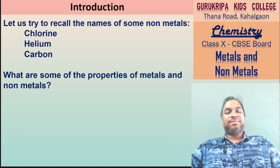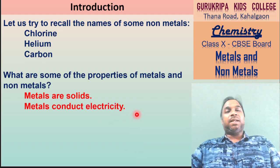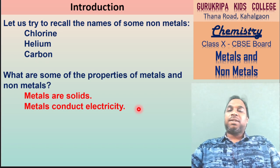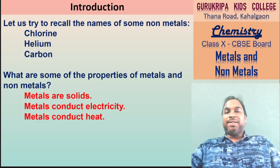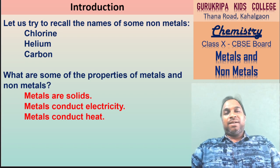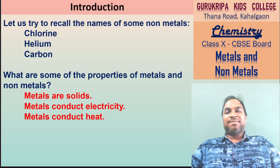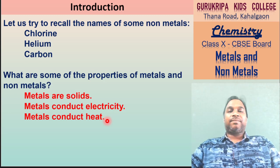और कुछ property सोचो. Metal solid होते हैं. Metals conduct electricity - iron, gold, silver, lead, aluminium, copper - सभी electricity conduct करते हैं. Metals heat conduct करते हैं. सारे metals गरम हो जाएंगे जैसे ही गरम करेंगे. Roughly इतना तो clear हुआ कि metal solid होते हैं, electricity conduct करते हैं, और heat भी conduct करते हैं.